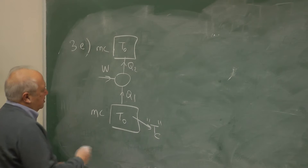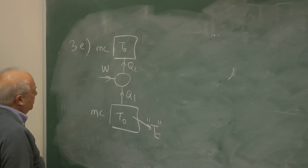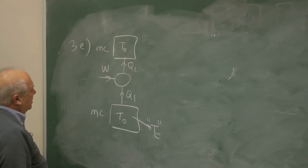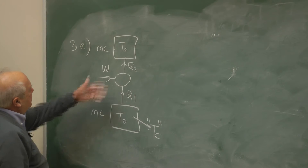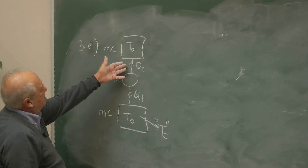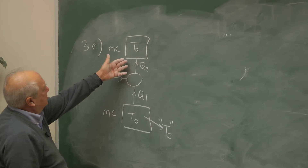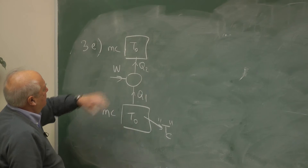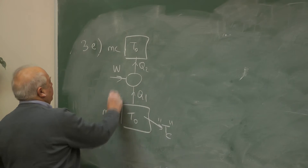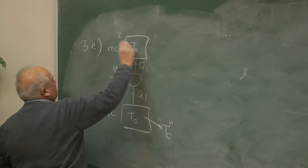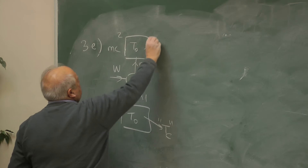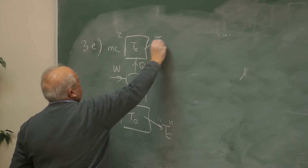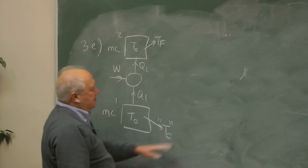We want to do so much work to bring it down to Tc, the cold temperature. And of course, as you dump heat onto the second block, this T0 temperature will increase to T final.